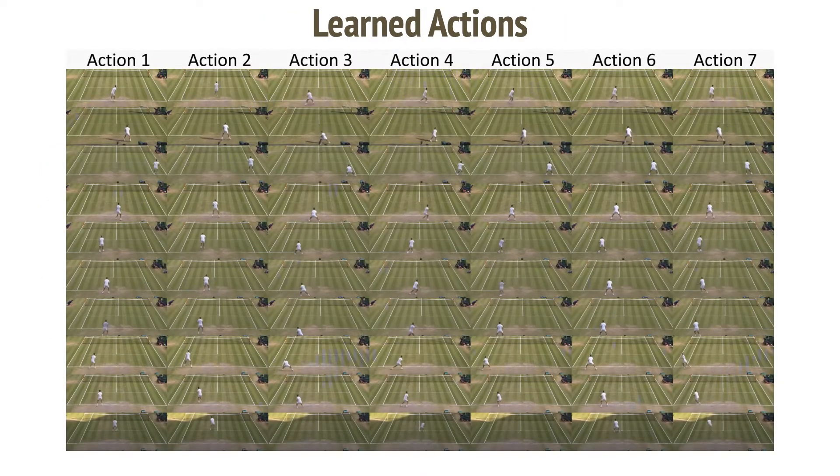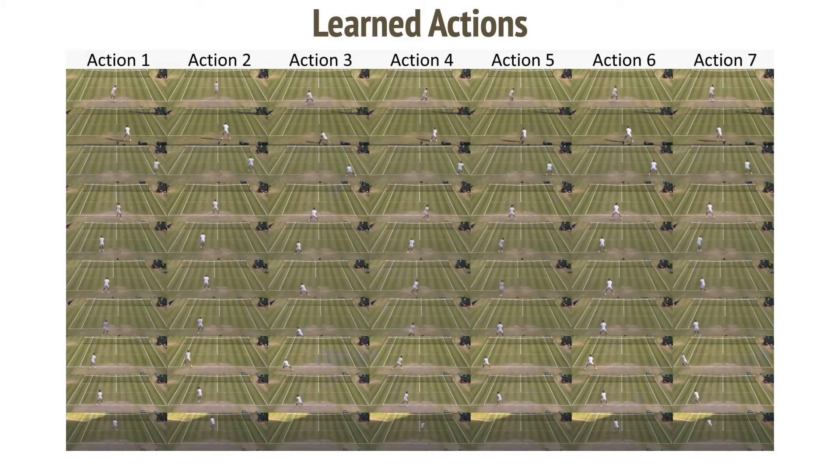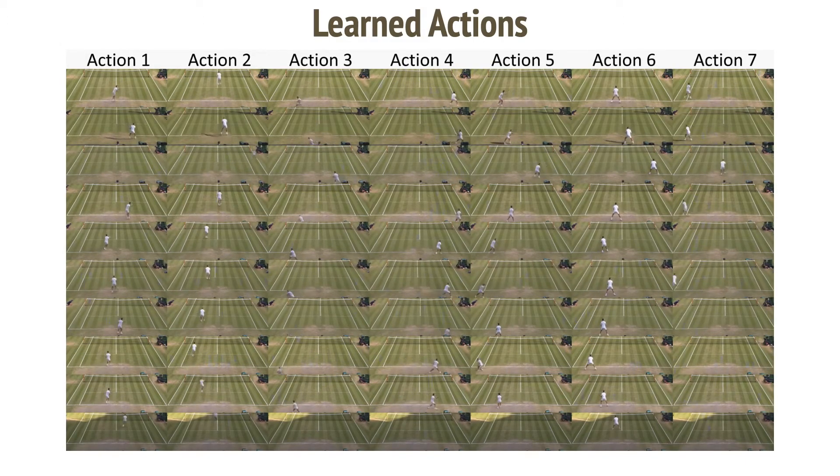For tennis, the model learns seven distinct actions which correspond to move right, advance to the net, move back, move left, stay in other actions. We can see that these actions are consistent in each column. Each row represents a different way of executing the action, including varying speed, direction, and the way the action is performed.